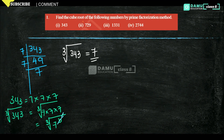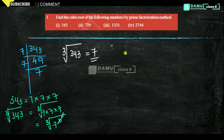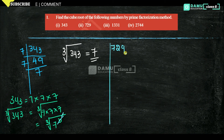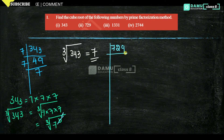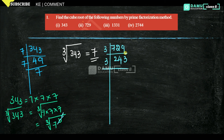Next one is 729. Let's apply the prime factorization method to 729. Start with 2 — not possible, because 9 is in the units place. Then start with 3: 3 × 243. Dividing again by 3: 3 × 81. Again by 3.